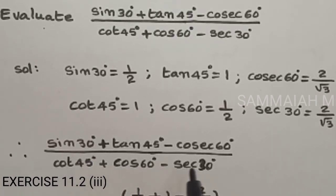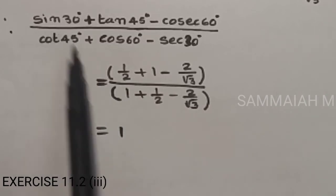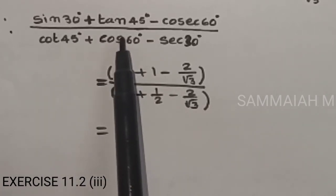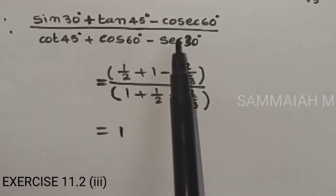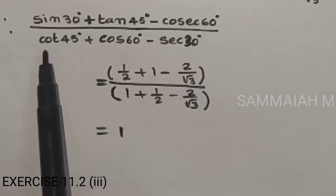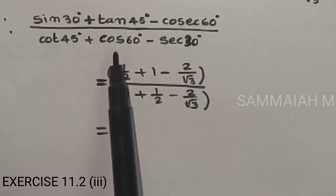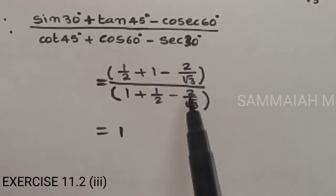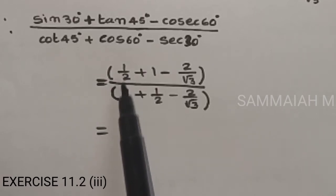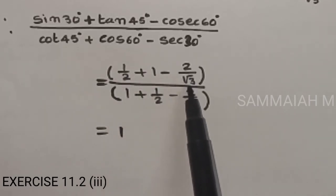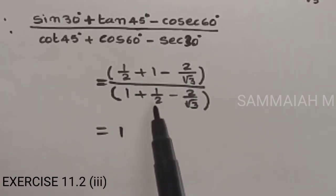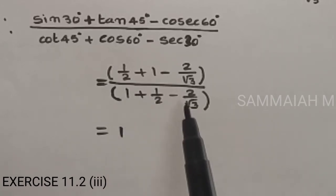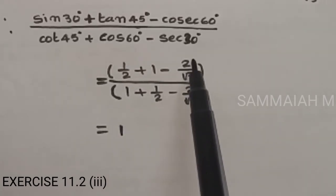Therefore sin 30 plus tan 45 minus cos 60 upon cos 45 plus cos 60 minus secant 30 equals 1 by 2 plus 1 minus 1 by 2 upon 1 plus 1 by 2 minus 2 by root 3. Both numerator and denominator are equal, so the answer is equal to 1.